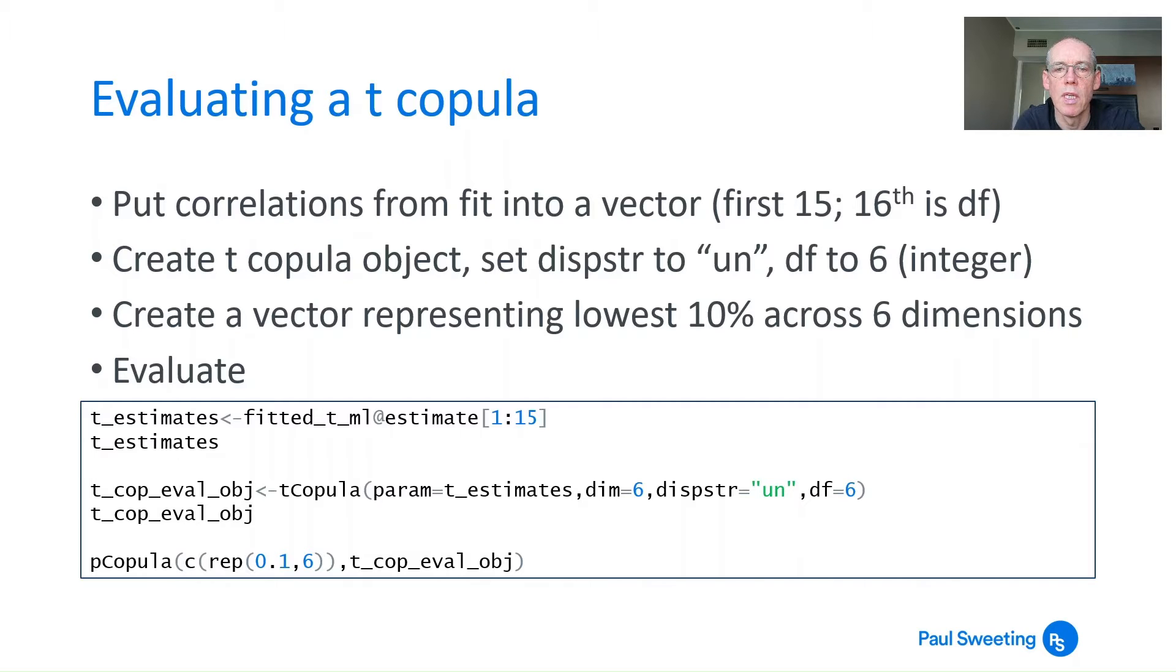To look at the result, we use pCopula. We want 10% across six dimensions, so we use the c function which creates a vector. I want to repeat the number 0.1 six times, so c, then in brackets, rep 0.1 comma 6. That repeats 0.1 six times, and c joins them into a vector. We evaluate that probability using this copula object.